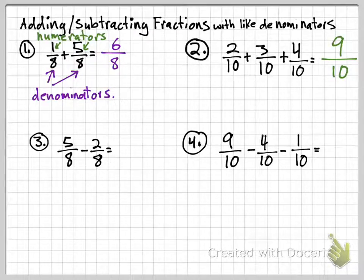On the bottom we're subtracting, and again we see that the denominators are the same, so we keep the denominator and on top we subtract. 5 minus 2 is 3, so our answer is 3 over 8 or 3 eighths.